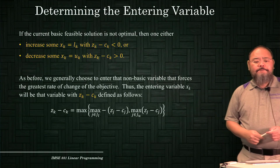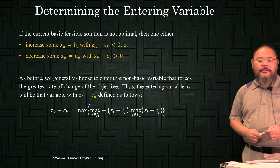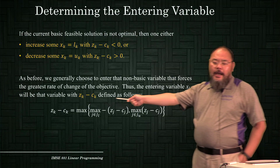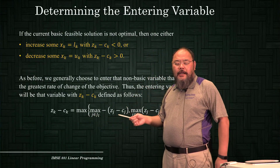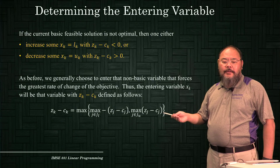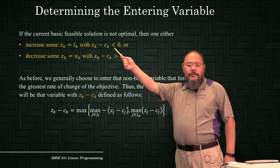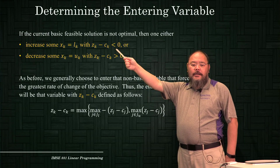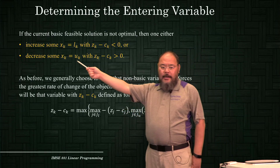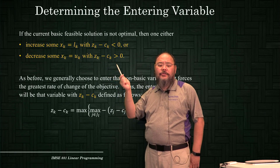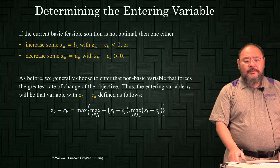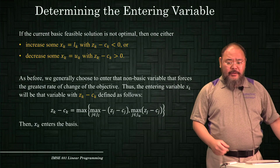As before, we choose the entering variable with the greatest rate of change in the objective function. We determine xk as the entering variable by taking the maximum of: (−zj+cj) for variables in the lower bound set, and the maximum of (zj−cj) for variables in the upper bound set. Whichever yields the maximum positive value is selected as the entering variable.